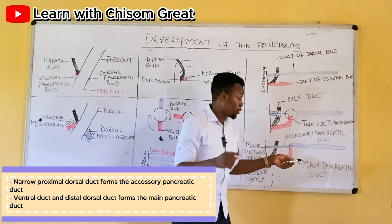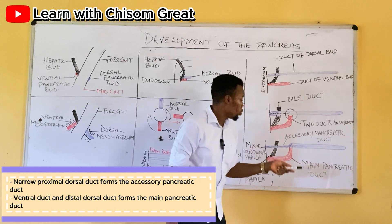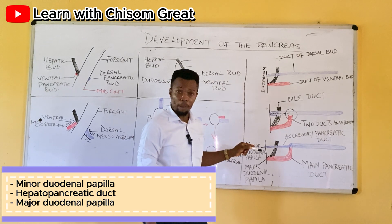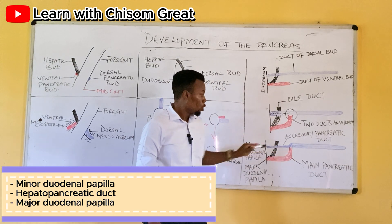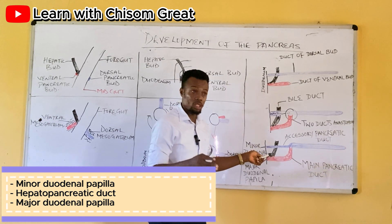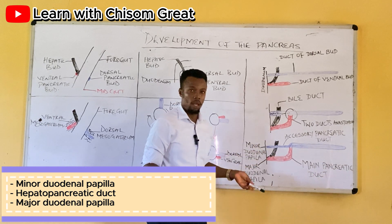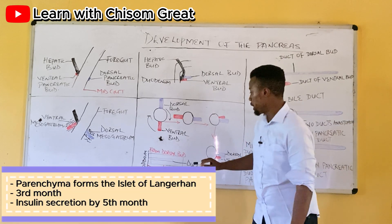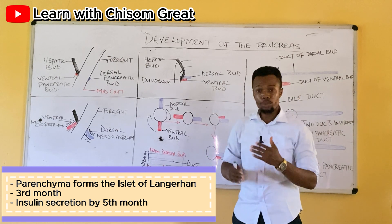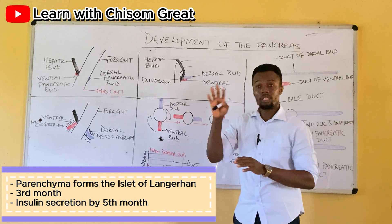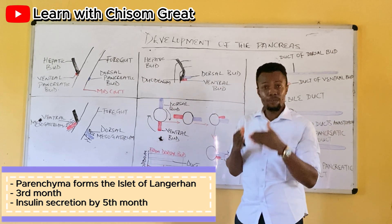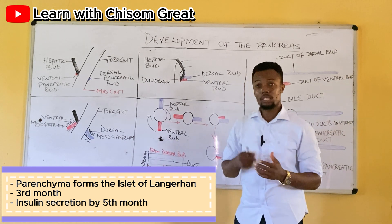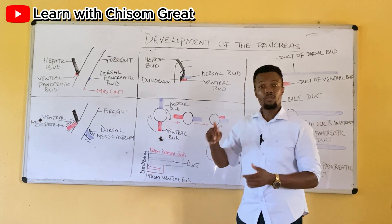The proximal part of the dorsal duct becomes the accessory pancreatic duct, which opens into the second part of the duodenum at the minor duodenal papilla. The main pancreatic duct joins with the bile duct to form the hepatopancreatic duct, and together they open into the major duodenal papilla. The islets of Langerhans, mainly found at the tail of the pancreas, develop from the parenchyma of the pancreatic tissue around the third month. By the fifth month, insulin secretion has started.